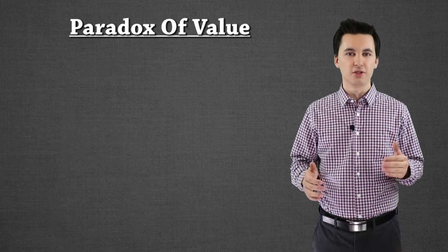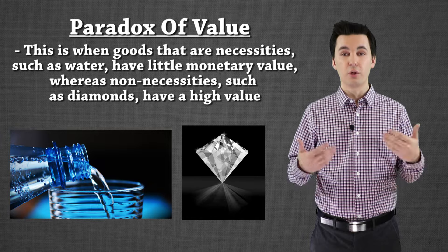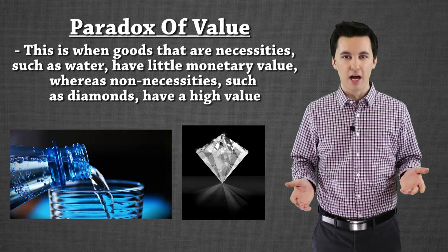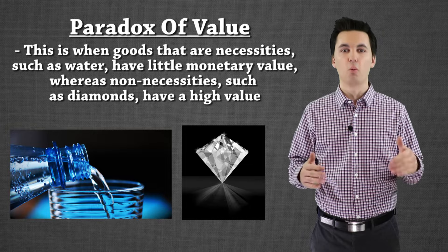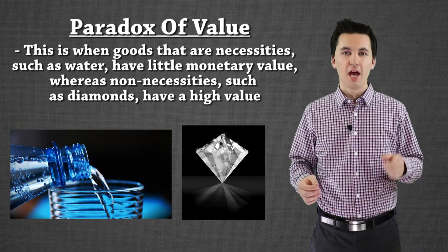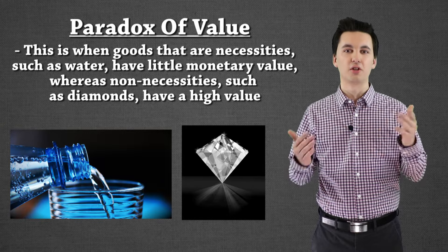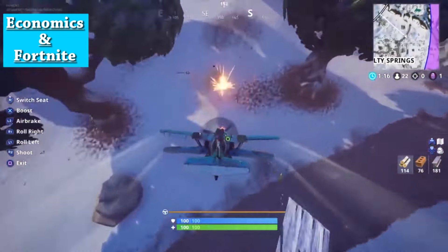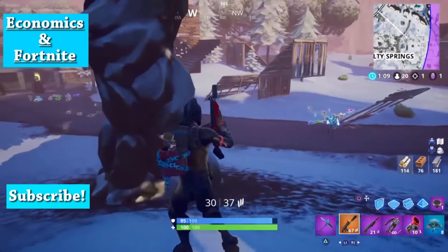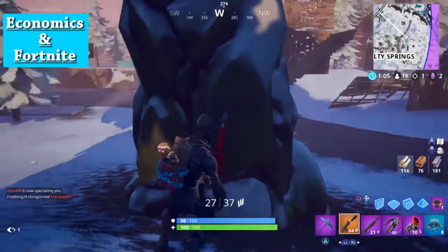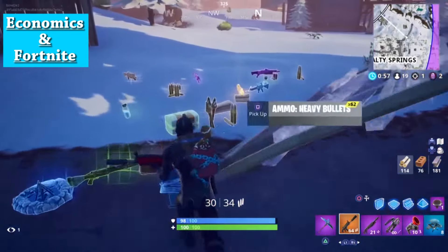Here we can get into another concept involving scarcity, trade-offs, and something called the paradox of value — an important concept that happens a lot in real life and also throughout Fortnite as you play. The paradox of value looks at why certain items that have no necessity in our lives have an extremely high monetary value, while other items that we really need to survive have little to no value. We can actually see this happen both in real life and in Fortnite. Depending on what you're doing in the game and your current situation, we value items differently, and that value will change consistently as situations change throughout the game. Let's actually take a look in Salty Springs — I'm now dive bombing with the airplane, kind of dunking on this player, taking them out.